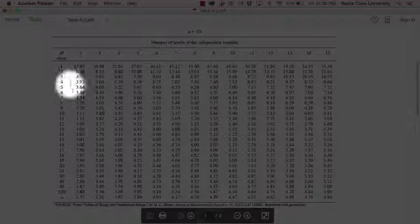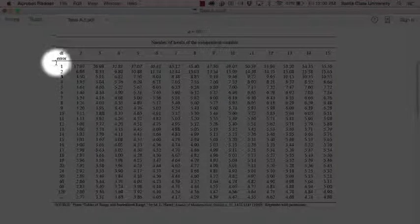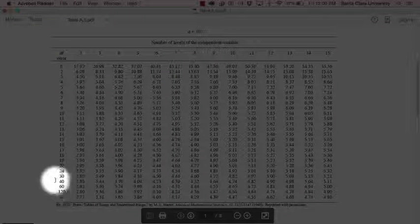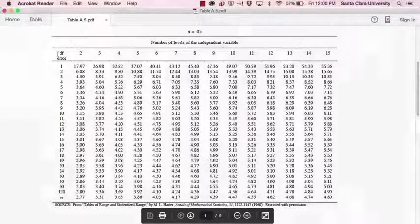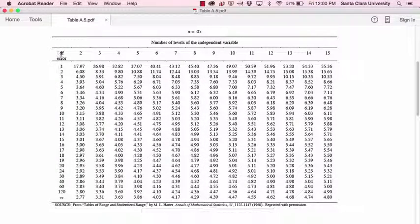So over here, we have the degrees of freedom error, and that is what we get from our ANOVA. In the ANOVA, we have the degrees of freedom error is the number of cases in each group added together, and then you subtract the number of groups. So if we have 10 cases in each of three groups, we would have degrees of freedom of 27.